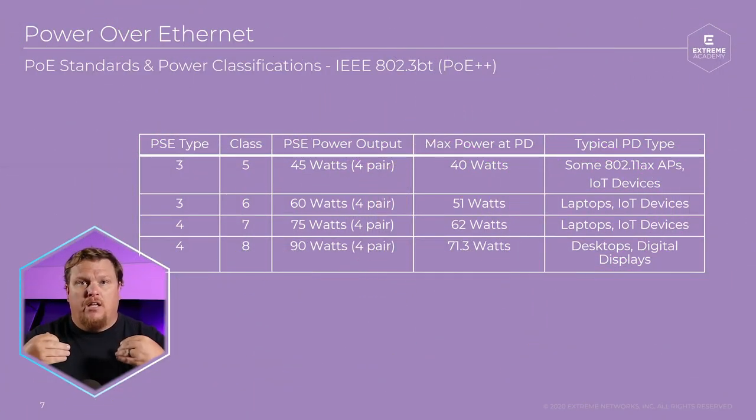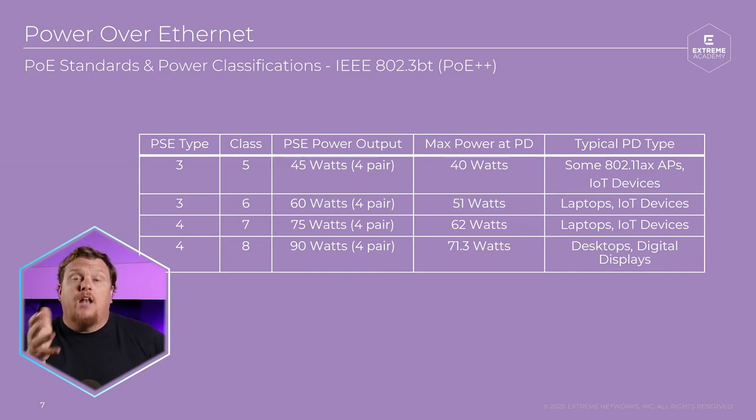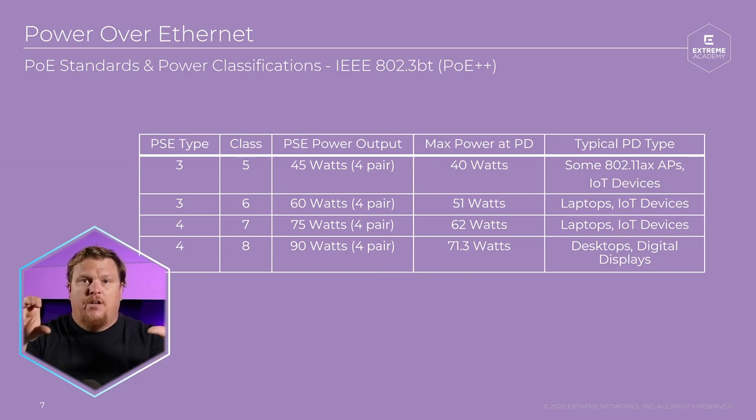Phones and access points are examples of PoE devices, but also security cameras, IoT devices, and thermostats. There are a number of devices whose responsibility is to consume power via Ethernet — Power over Ethernet. When you purchase a switch, you need to look at how much power it can output and whether it has the power capacity to power all the devices you need.